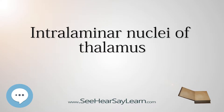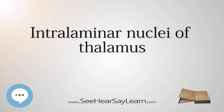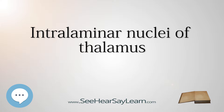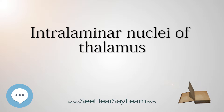The intralaminar nuclei are collections of neurons in the thalamus that are generally divided in two groups as follows. The anterior, rostral group includes the central medial nucleus, paracentral nucleus, and central lateral nucleus.